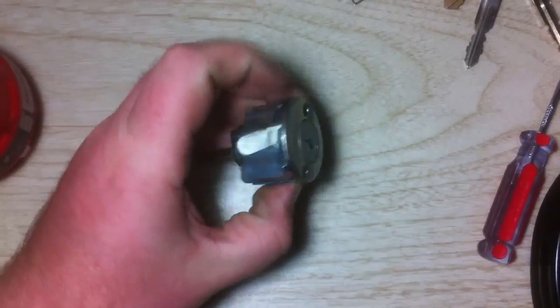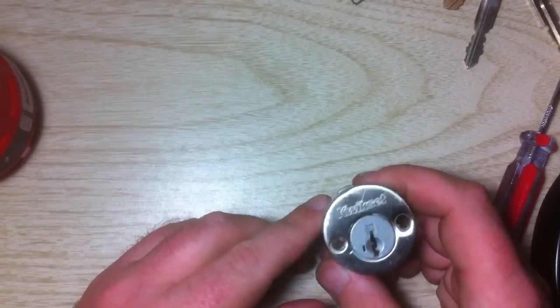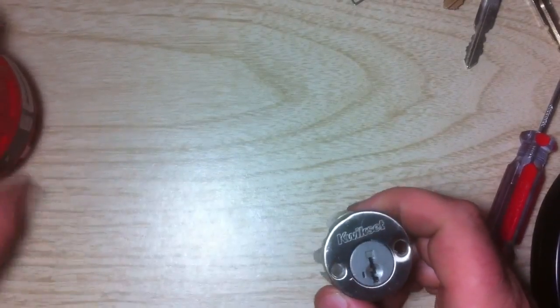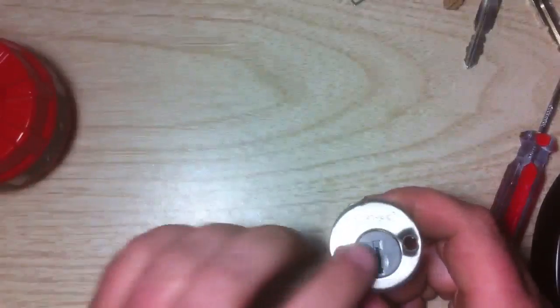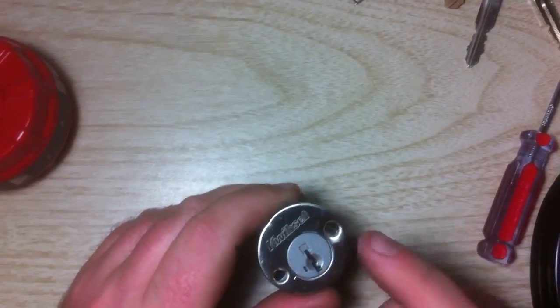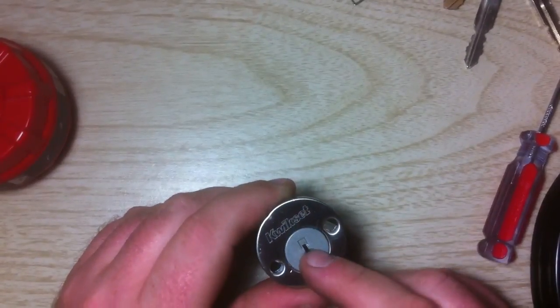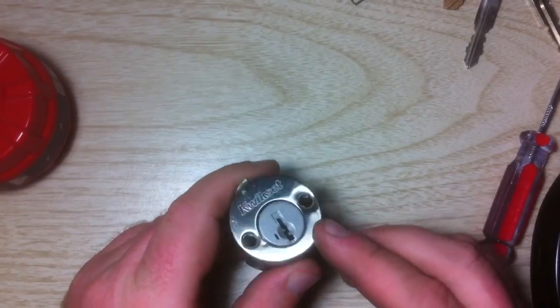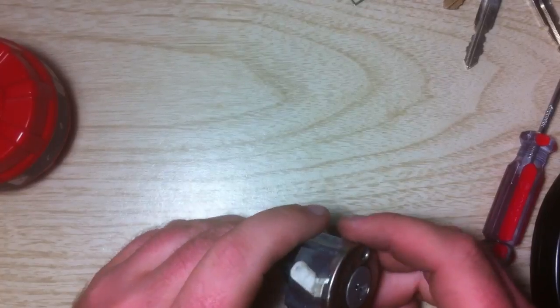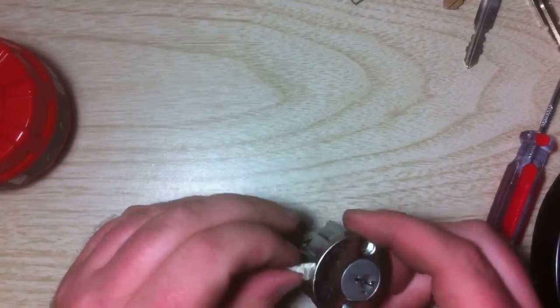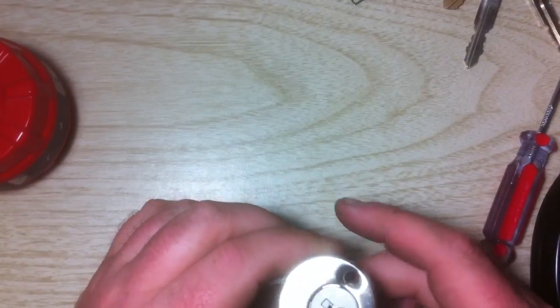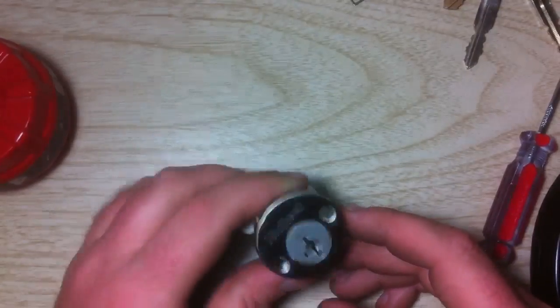But just remember, you can only rekey this smart key without having to use the cradle if you have a current operating key. If you do not have a key that works the lock, you will have to call a locksmith out, or you will have to remove your hardware and take it down to the locksmith shop. So if you have any questions, please ask and I'll try to help. And as always, I appreciate you watching.